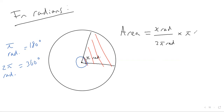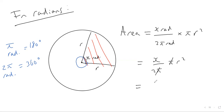We then times that by πr², the area of our circle. So we get x over 2π times by πr². The π's actually cancel out, so you're left with x over 2 times r squared, which you can write as one half times x times r squared.